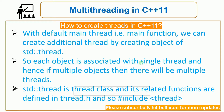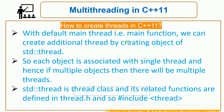Each object is associated with a single thread, so if you create multiple objects there will be multiple threads. Whenever you create an object of the thread class, one thread will be created. If you create multiple objects of the thread class, multiple threads will be created. So std::thread is a thread class and its related functions are defined in the thread header file.